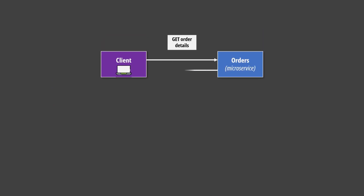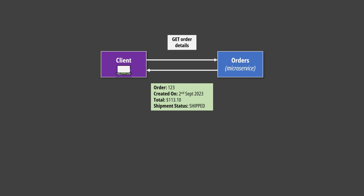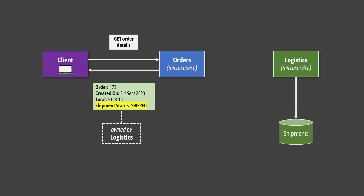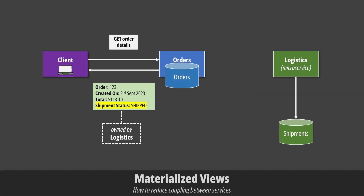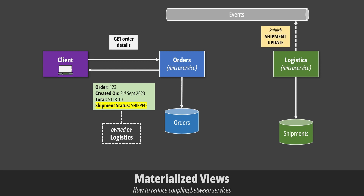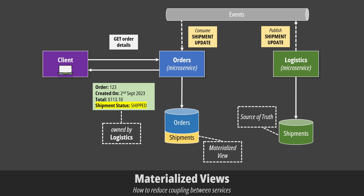However, there is still a problem to solve — this is possibly the most important part of this video. Consider the scenario where an external client performs a request to our system. We've decided to make this communication synchronous over API, which means the microservice serving the request must reply immediately. But the replying microservice might need data managed by another microservice — for example, the logistic service manages shipment statuses. We can solve this by using materialized views. Anytime the shipment status is updated, the logistic service publishes a shipment domain event. Other services consume these events and store the information they need in their own database. The source of truth remains with logistics, but the order service can store its own view of it — allowing it to answer external API requests without contacting any other microservice.